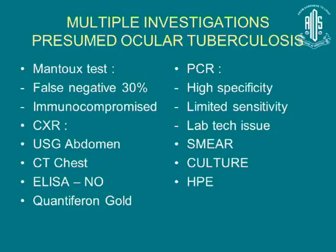At our center, the protocol used by immunologists, rheumatologists, and gastroenterologists involves a Mantoux test, a contrast-enhanced CT of the chest, and an ultrasound of the abdomen. If anything positive is found — for example, a positive lymph node on the chest — we proceed to endobronchial ultrasound with a biopsy of the lymph node followed by histopathological examination.